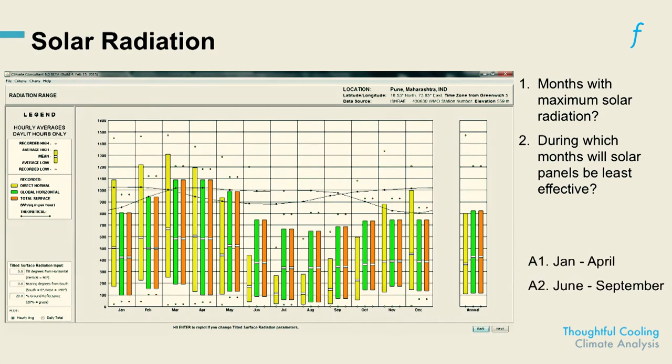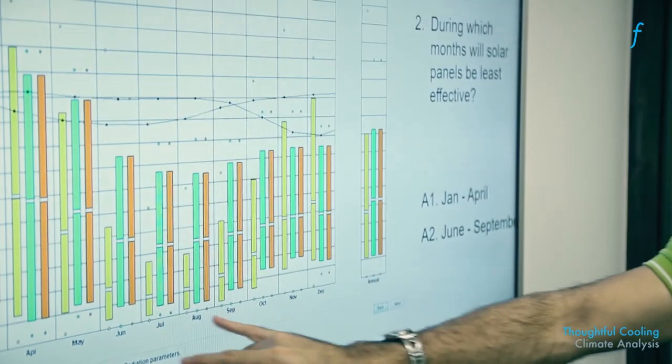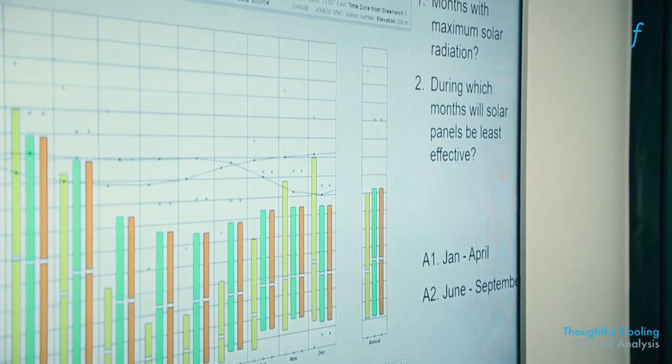So let's see what the answers to that are. Yes, so January to April are the months with maximum solar radiation as you can see, so your solar panels will be very effective, and the months where it's least effective is June to September because the solar radiation is very low.